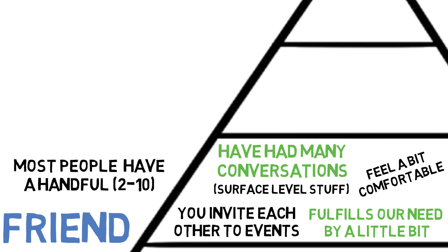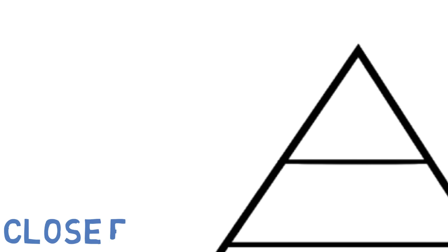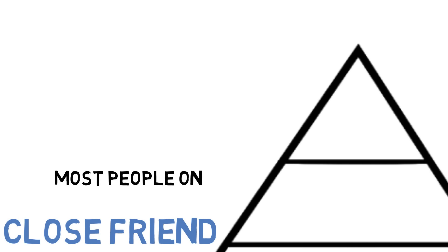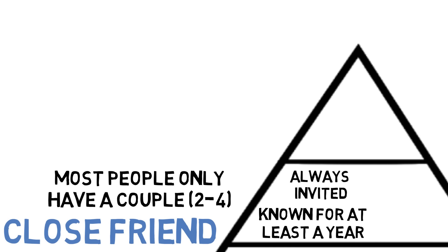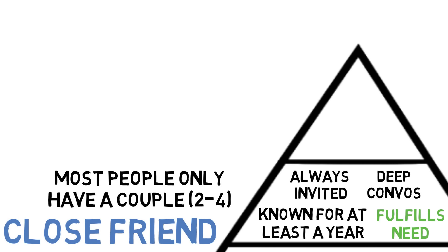The tier above this is the close friend. Most people only have a couple of close friends, like two to four. Close friendships are friendships that have stood the test of time. These are people that you've interacted with over the course of at least a year or more. Close friends are the first people that you think of when you want to hang out. They are almost always invited to any event or party that you host. These are the people that you feel extremely comfortable around, and because of this, you've likely shared some deep and personal secrets with them. Close friends fulfill our need for human interaction by a lot. In fact, if all we have are a ton of close friends, we'll be pretty well off.